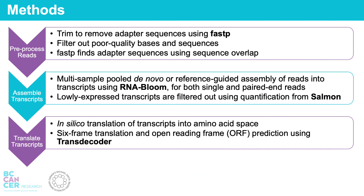The first step of Rampage is to pre-process the reads by removing sequencing adapters using FASTP. Next, the processed reads are assembled into transcripts using RNA-Bloom. In these transcripts, those lowly expressed are filtered out using quantification values from Salmon. Then, the nucleotide transcript sequences are translated into amino acid protein sequences using TransDecoder.